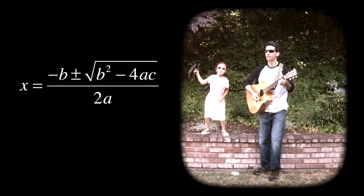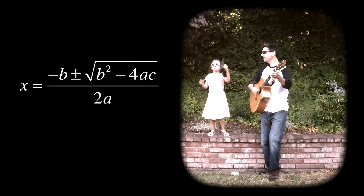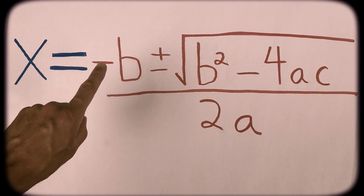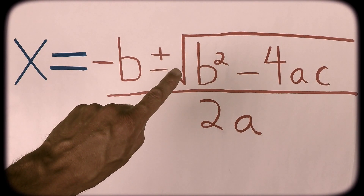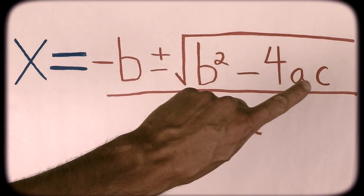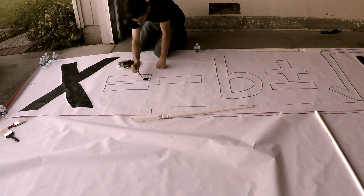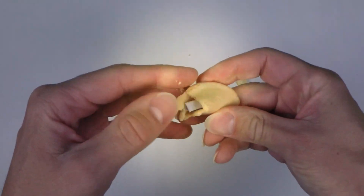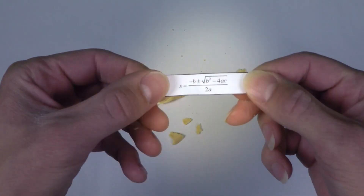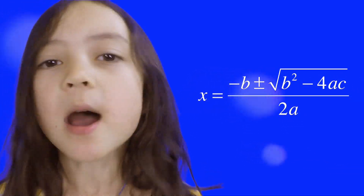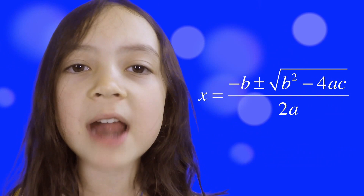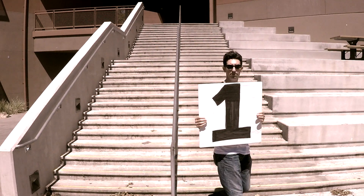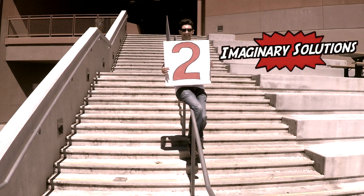x equals negative b plus or minus the square root of b squared minus 4ac all over 2a. And this gives you one or two real solutions or two imaginary solutions.